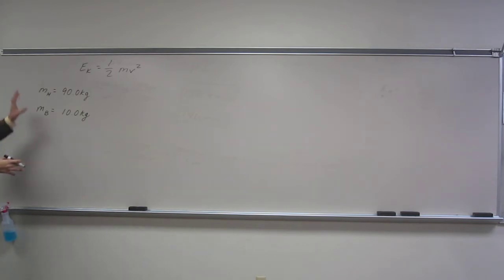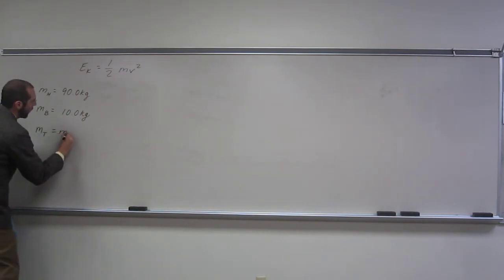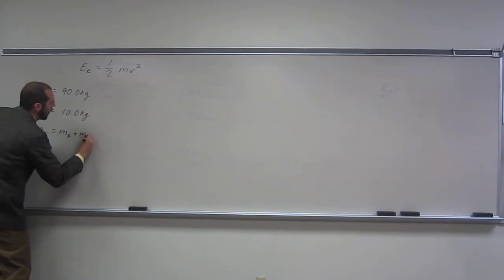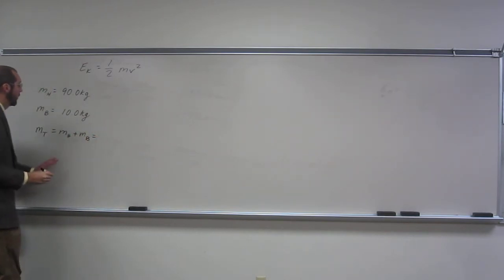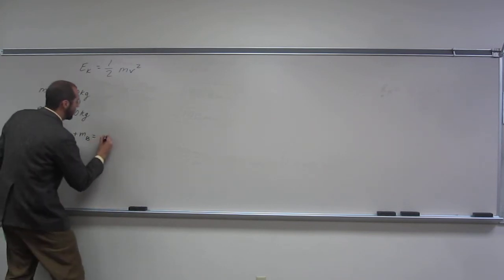So the mass total is going to be the mass of the human plus the mass of the bicycle, right? Is everybody cool with that? So let's just write it down. So it's going to be the combined, of course, 90 plus 10 is 100.